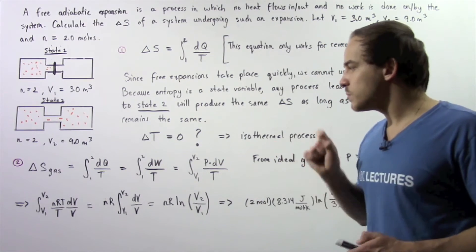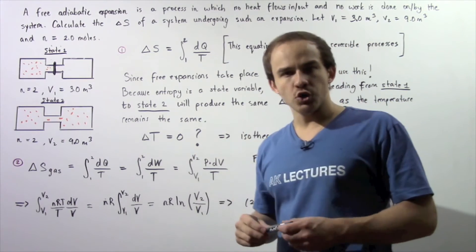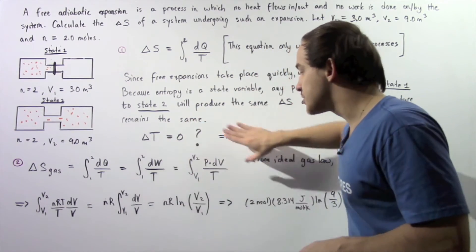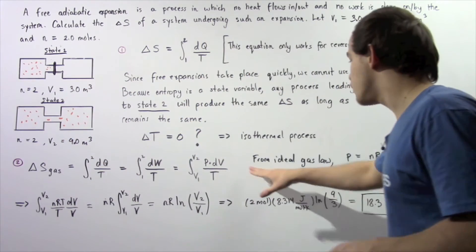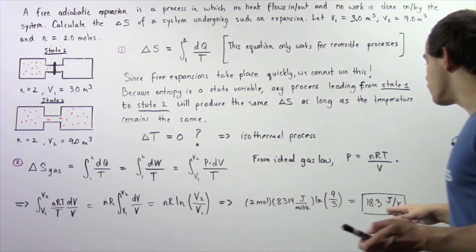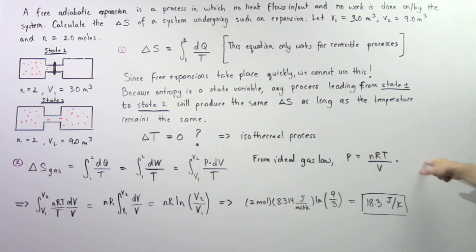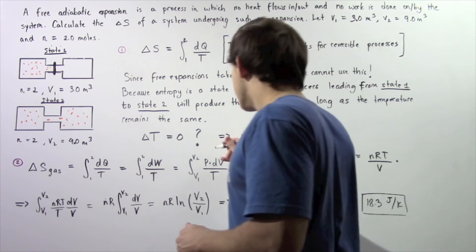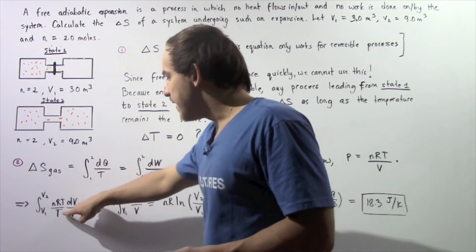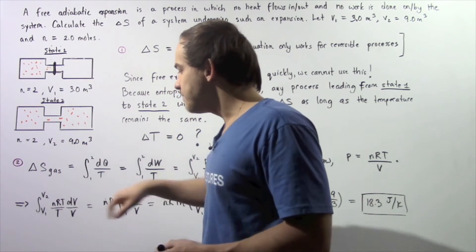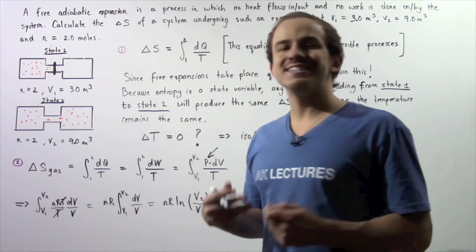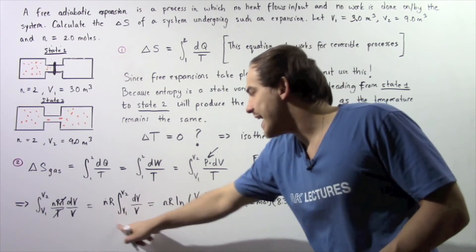We now integrate with respect to volume from V1 to V2. Since pressure also changes, we use the ideal gas law to express pressure in terms of volume: P equals NRT divided by V. Substituting this into the integral, we get the integral of NRT divided by V, all divided by T, times DV. The temperatures cancel, and NR is a constant that can be brought outside the integral, giving a simplified expression.